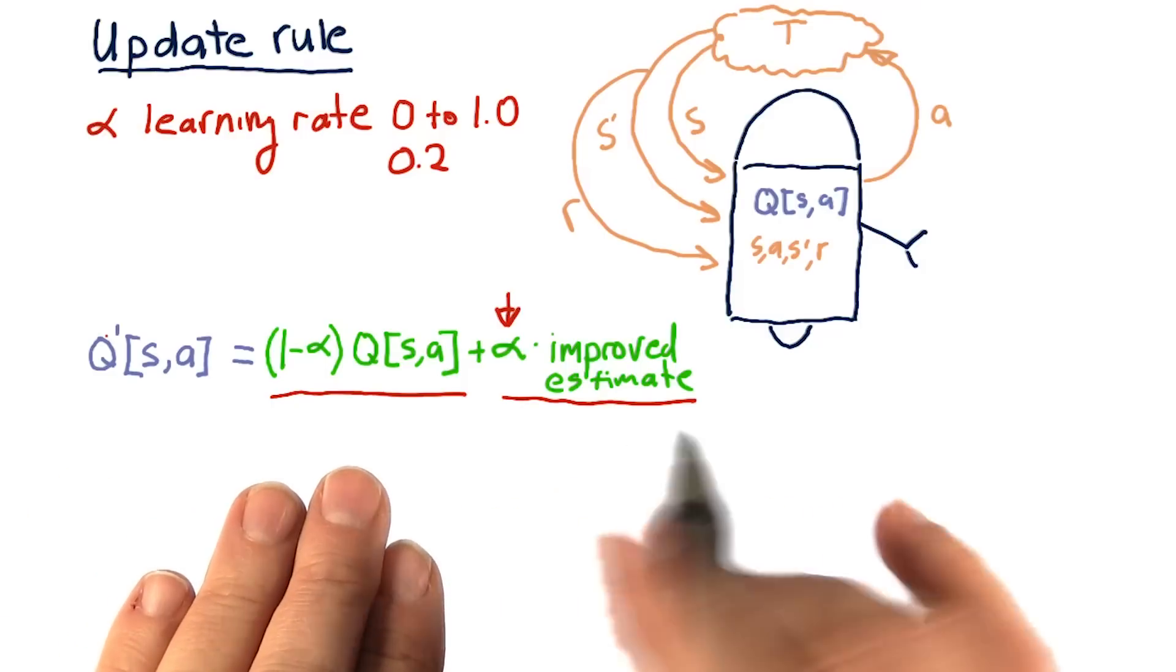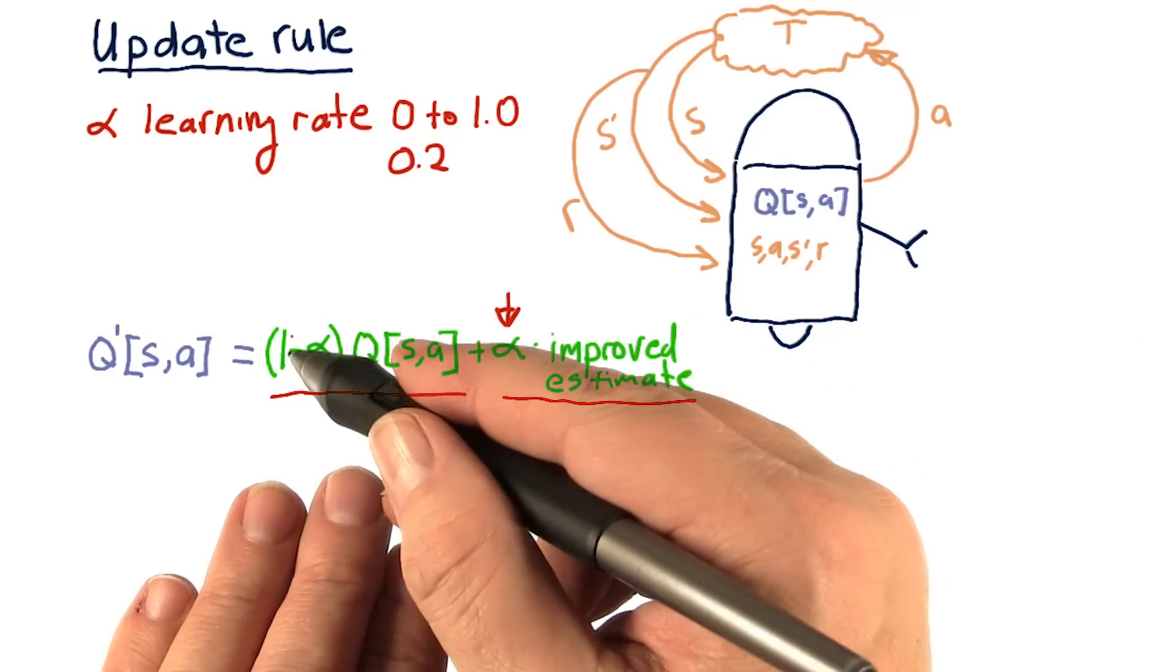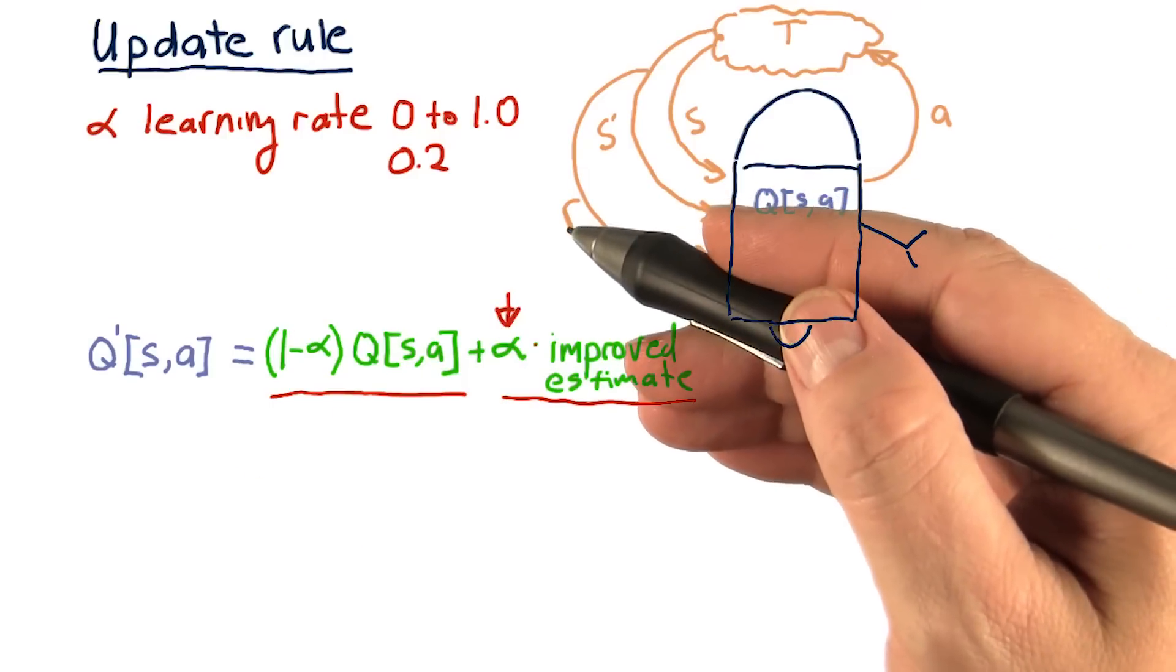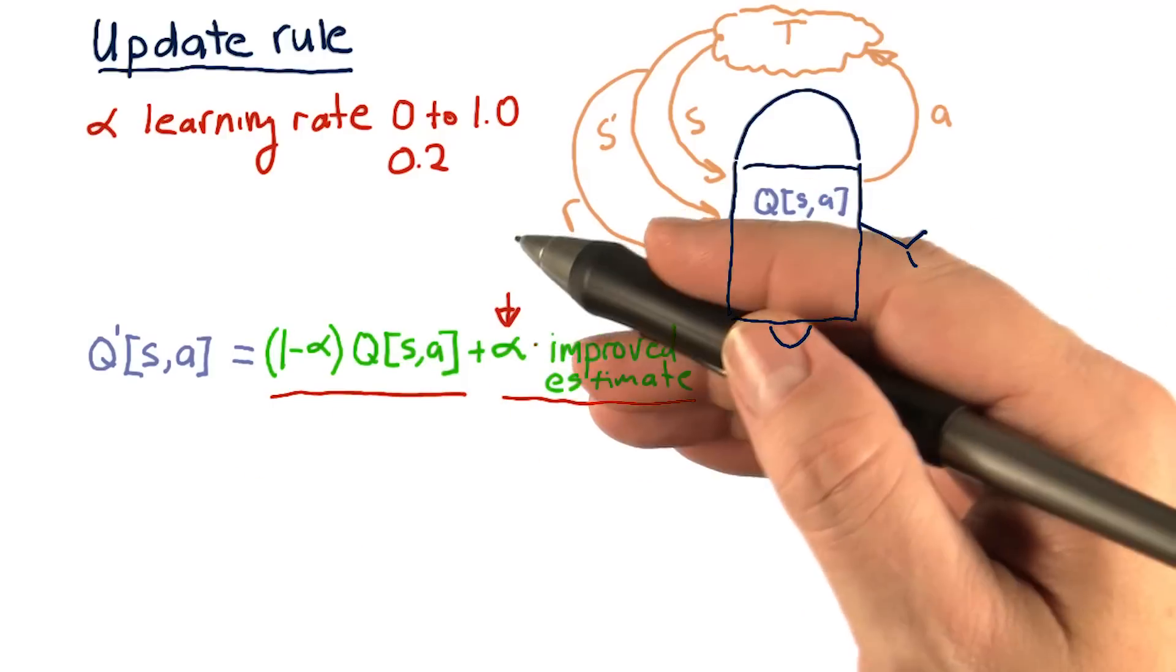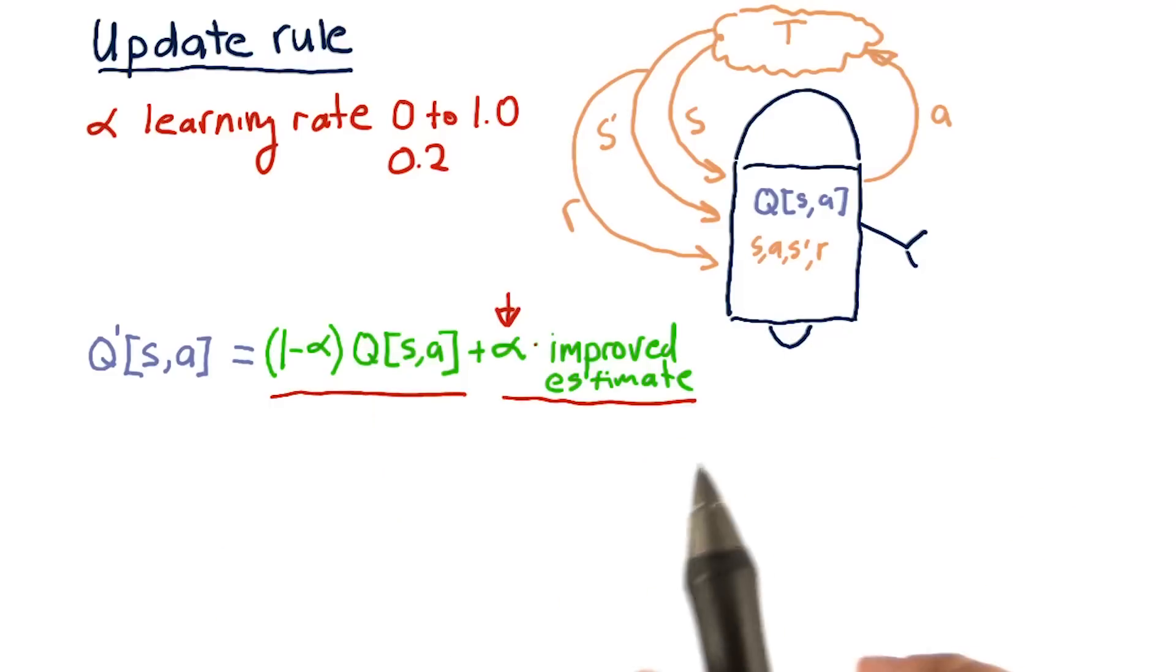it's a blend of alpha times the improved estimate, plus 1 minus alpha of the old value. So larger values of alpha cause us to learn more quickly. Lower values of alpha cause the learning to be more slow.